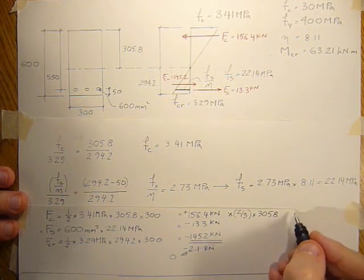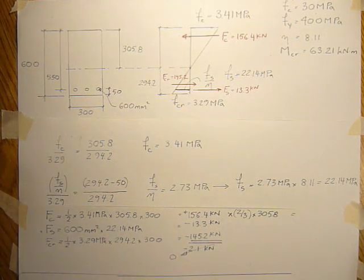And that will be 156.4 times 2 times 305.8 divided by 3. And then put it into kNm divided by 1,000 again.